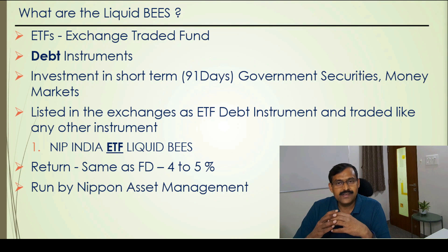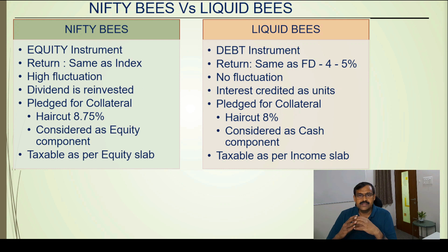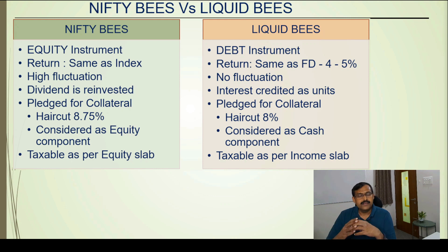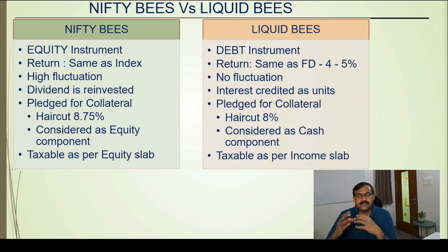Here are the differences between liquid bees and nifty bees. Nifty bees are equity instruments with risk involved based on equity market conditions. The return is the same as the Nifty 50 index — higher if the index goes up, lower or even negative if it goes down. The fluctuation of nifty bees matches the nifty 50 index. Liquid bees are a debt instrument with very low risk, and the return is stable at around four to five percent, like a fixed deposit.